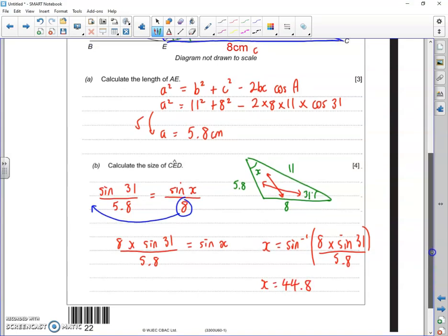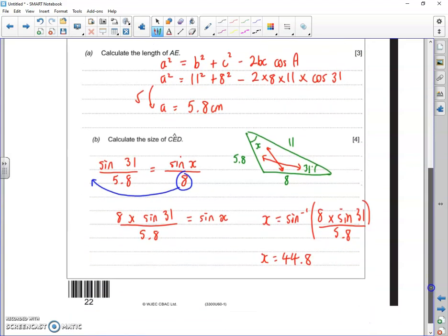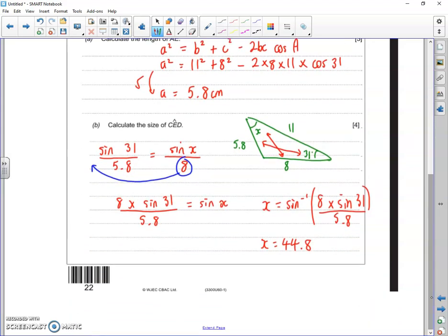And so that's true for angle A up in the top left, 44.8 there, and 44.8 there. And that's the end of the 2018 June Higher Maths Paper 2. Thank you.